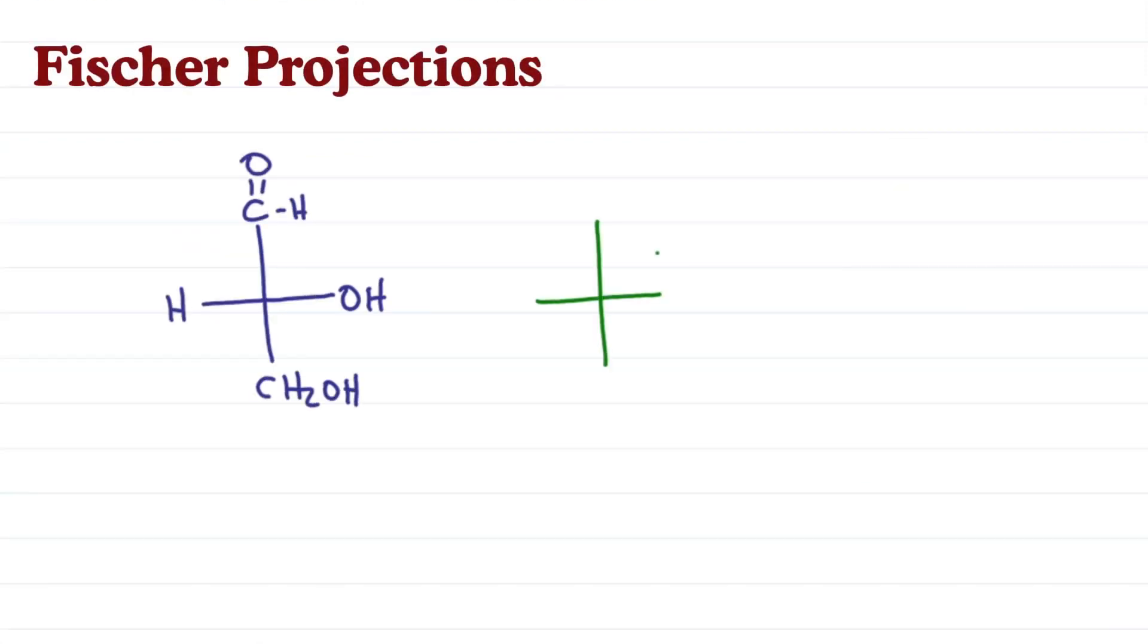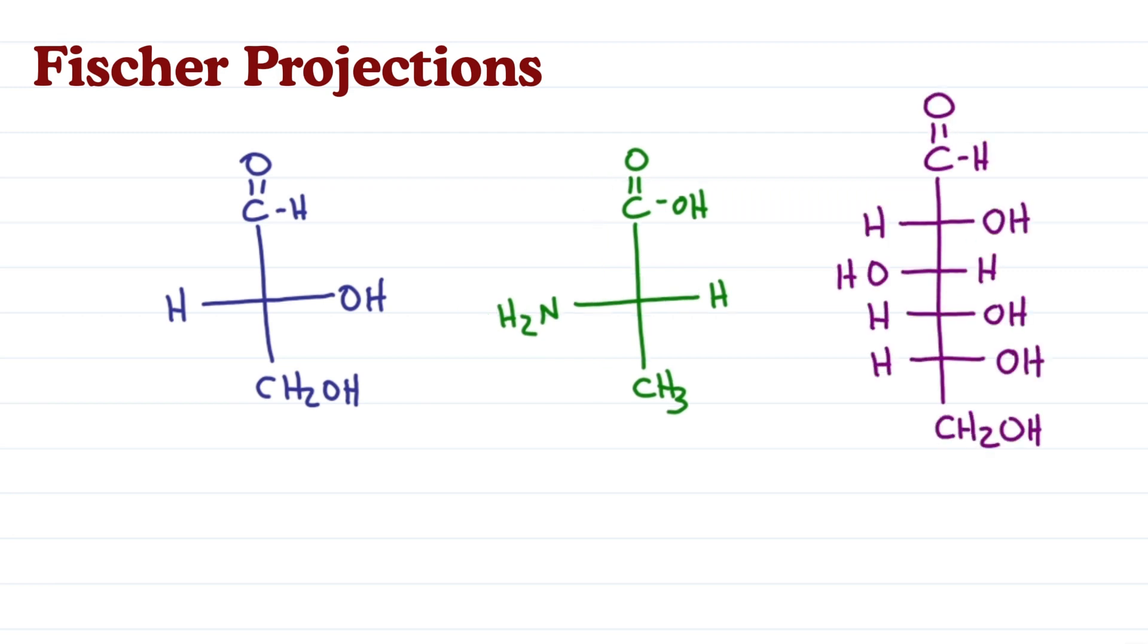Fischer projections are great for easily representing chiral molecules on paper such as D-glyceraldehyde, L-alanine, or D-glucose.